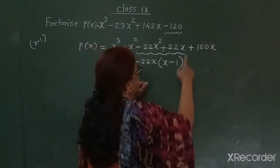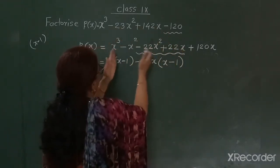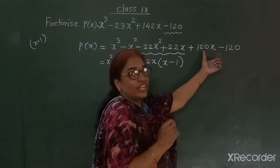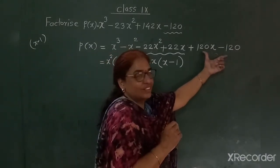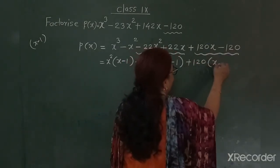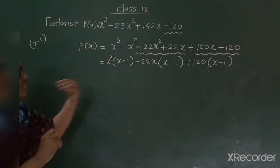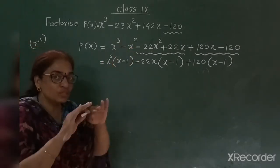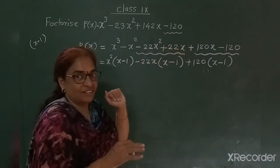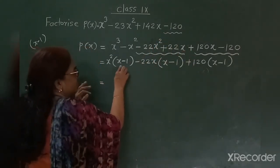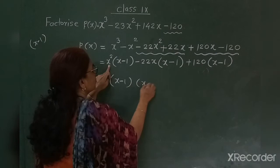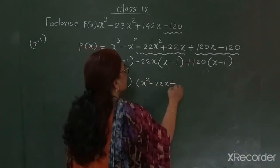Now, the second term was split and the third term was split. The last constant term minus 120 I kept as is, because I need 120. From it, taking constant 120 common leaves x minus 1 in the bracket. So x minus 1 is common throughout all terms, and after taking it common, what remains is x squared minus 22x plus 120.